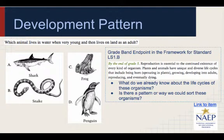Which animal lives in water when very young and then lives on land as an adult? A. Shark. B. Snake. C. Frog. D. Penguin. Grade band endpoint for standard LS1.B: by the end of grade 5, reproduction is essential to the continued existence of every kind of organism. Plants and animals have unique and diverse life cycles that include being born, sprouting in plants, growing, developing into adults, reproducing, and eventually dying.